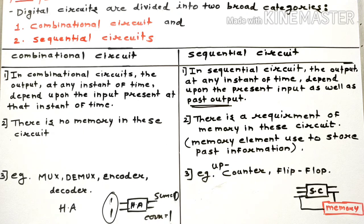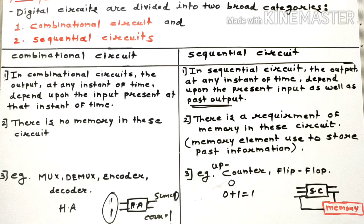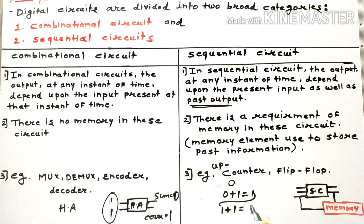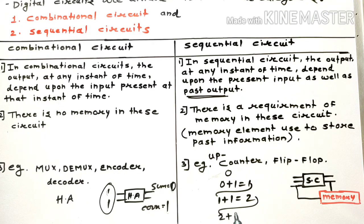Let's go with the up counter. Up counter means 0, 1, 2, 3, 4 and so on. Initially, consider that the counter stores 0. So the next count will be 0 plus 1, which gives 1. Then next count is 1 plus 1, which gives 2. Next count is 2 plus 1, that is 3.